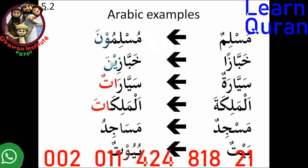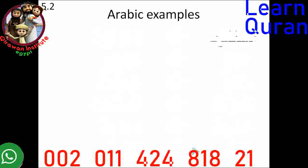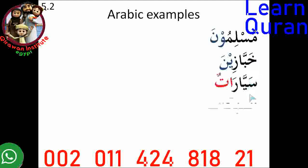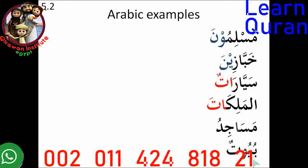These first four types are more regular, and the last two are irregular. So we have the words: Muslimoon — Muslims; Khabbazeen — bakers; Sayyarat — cars; Al-Malikat — queens; Masajid — mosques; and Buyut — houses.